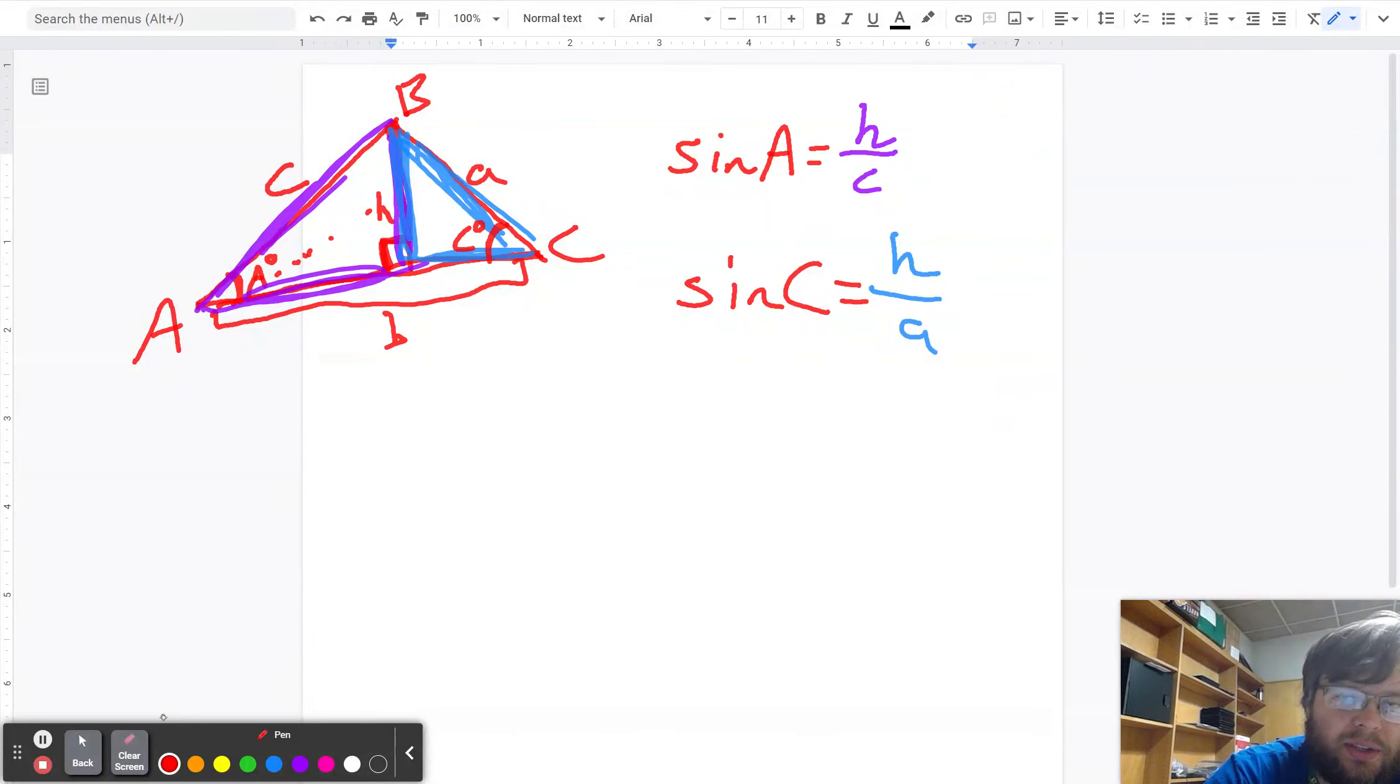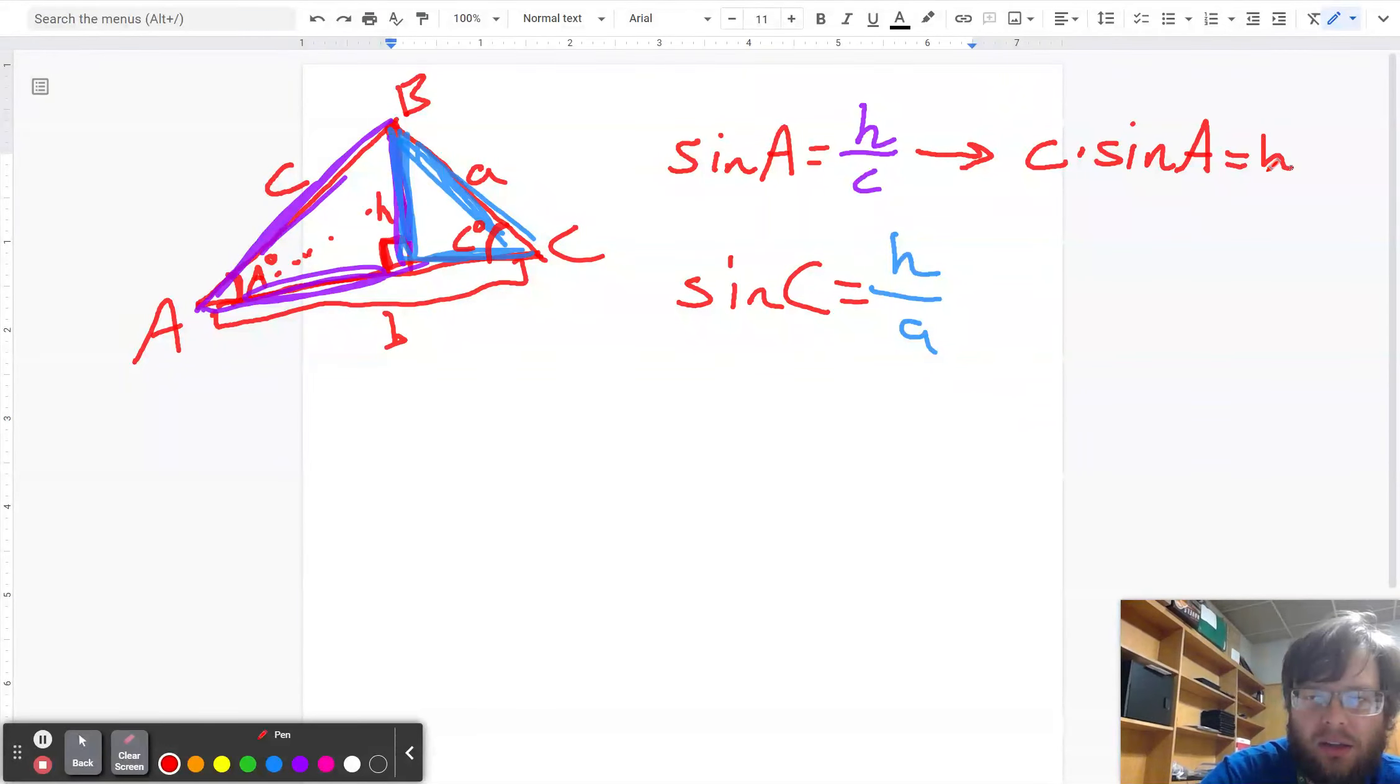Now both of these equations have the letter H in them. So what I'm going to try to do is solve for the letter H. Think about how you solve for the letter H. Multiply both sides by C. So you have C times sine of A is H. Over here, you multiply both sides by A, and you have A times sine of C is equal to H.